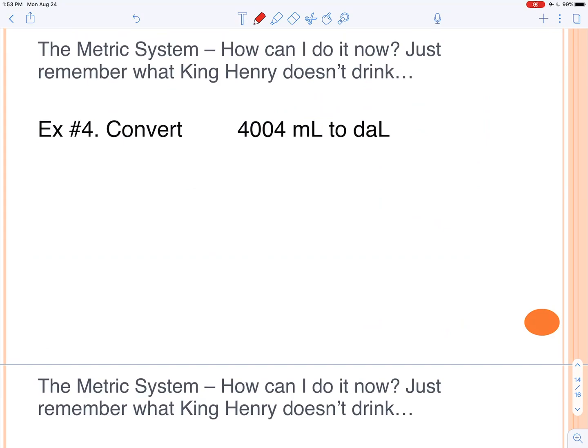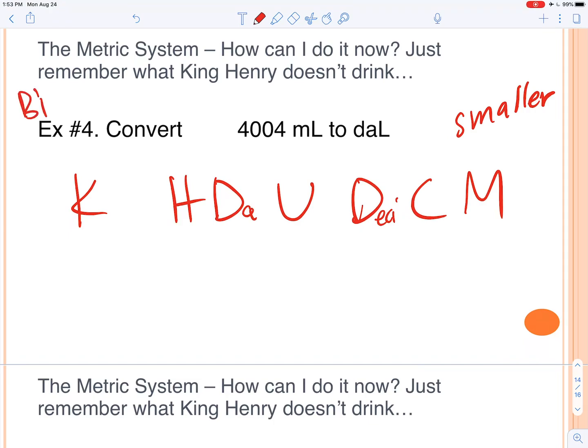A couple more examples. Again, just remember King Henry doesn't usually drink chocolate milk. The first D is DA. So how can you remember that? These numbers are smaller, and we know that decimals are usually small numbers. The numbers on the left are bigger. So go ahead and try this one. So from milliliters to deciliters, that's one, two, three, four spots. My final answer.